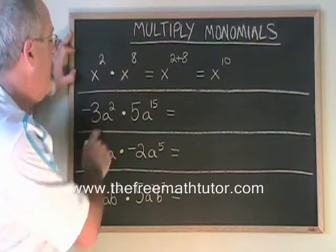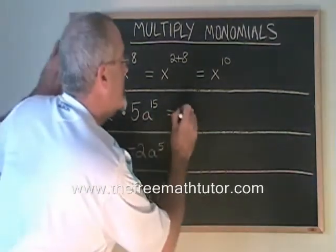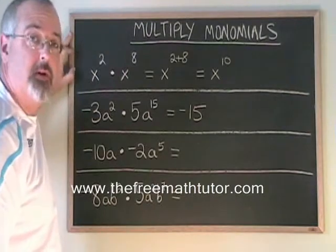Here we have negative 3a squared times 5a to the 15. Negative 3 times 5 is negative 15. So that is our numerical coefficient for our answer.